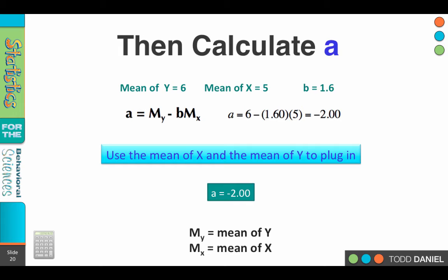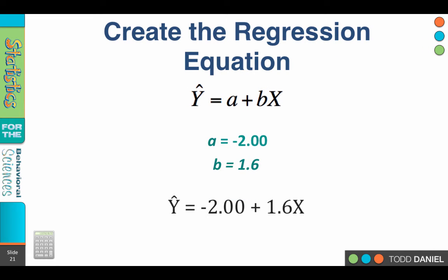Since we have the a and the b value, we're ready to plug those into our general equation and create a specific regression equation for these data. So once again, ŷ = a + bx. We've calculated an a of negative 2 and a b of 1.6. Plug them into the equation and we now have, for our data, ŷ = -2 + 1.6x.